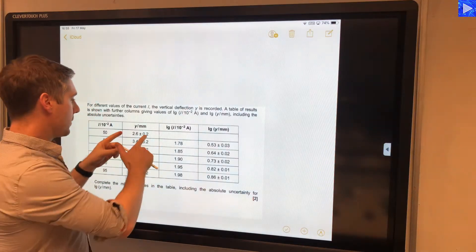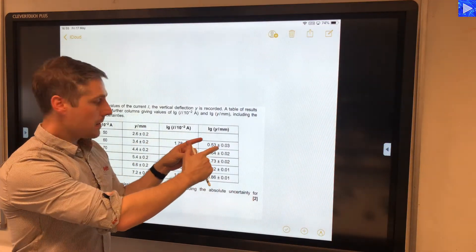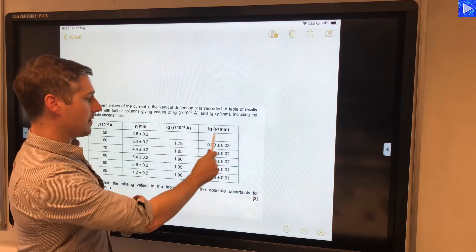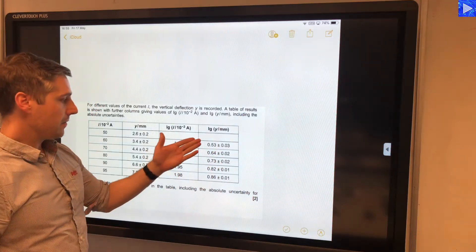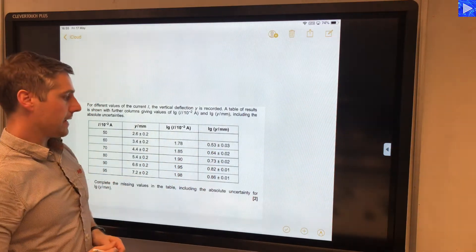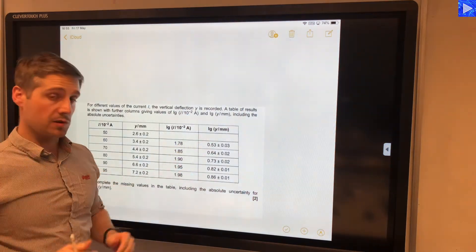So we need to work out the log value for y, but we also need to state the absolute uncertainty. You can see this upper value here is missing—we need to calculate that and the absolute uncertainty. These ones are given to us.